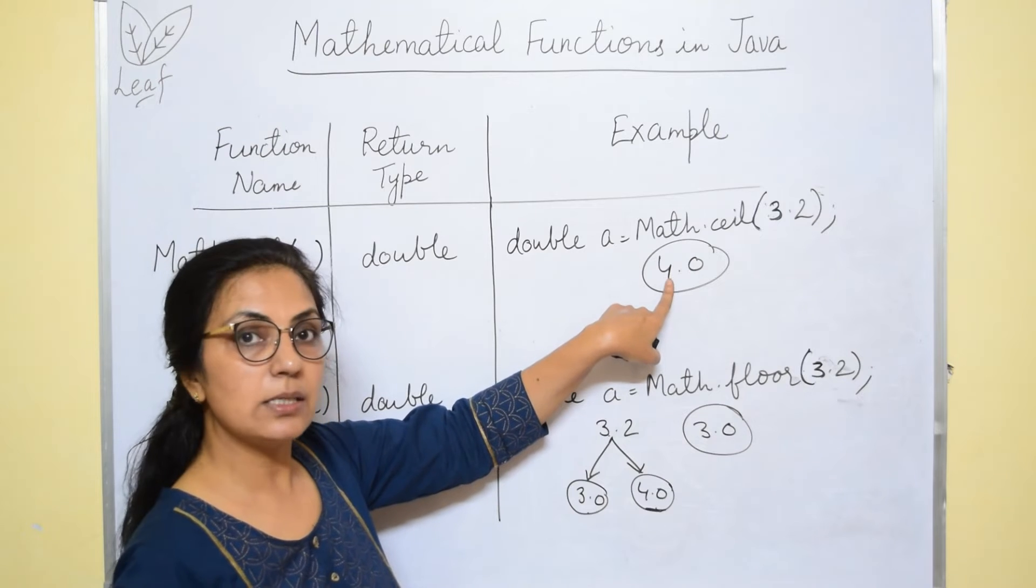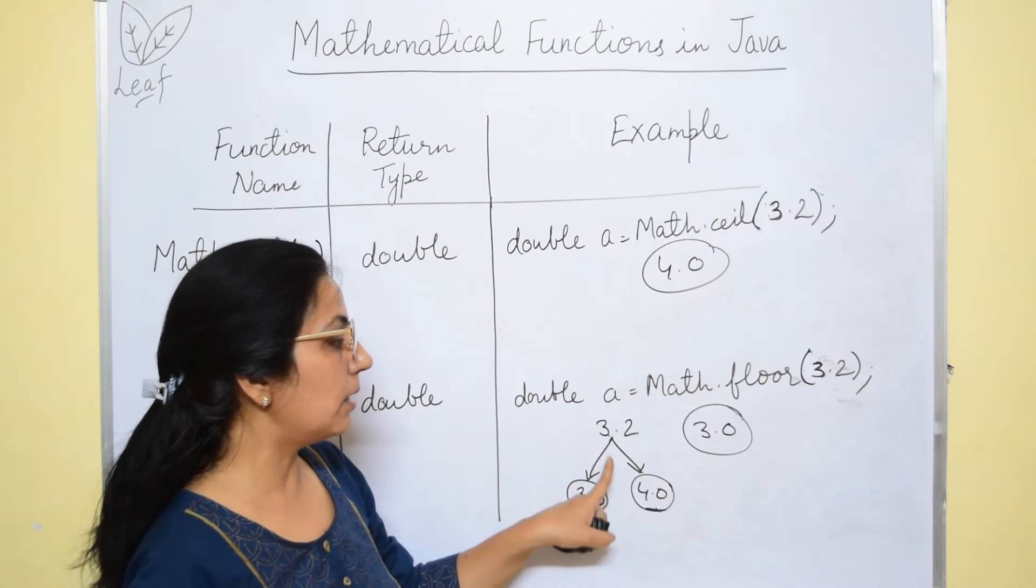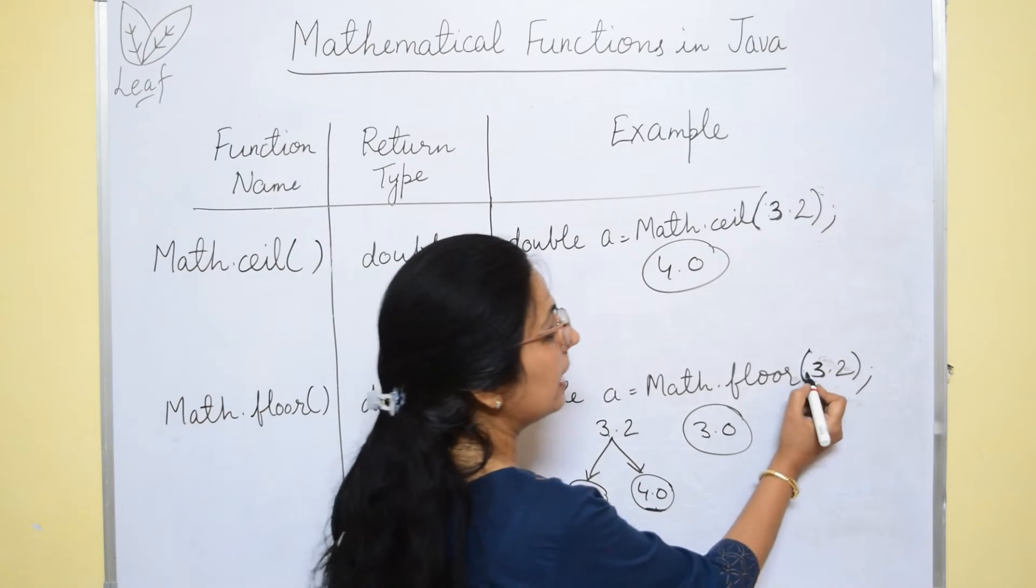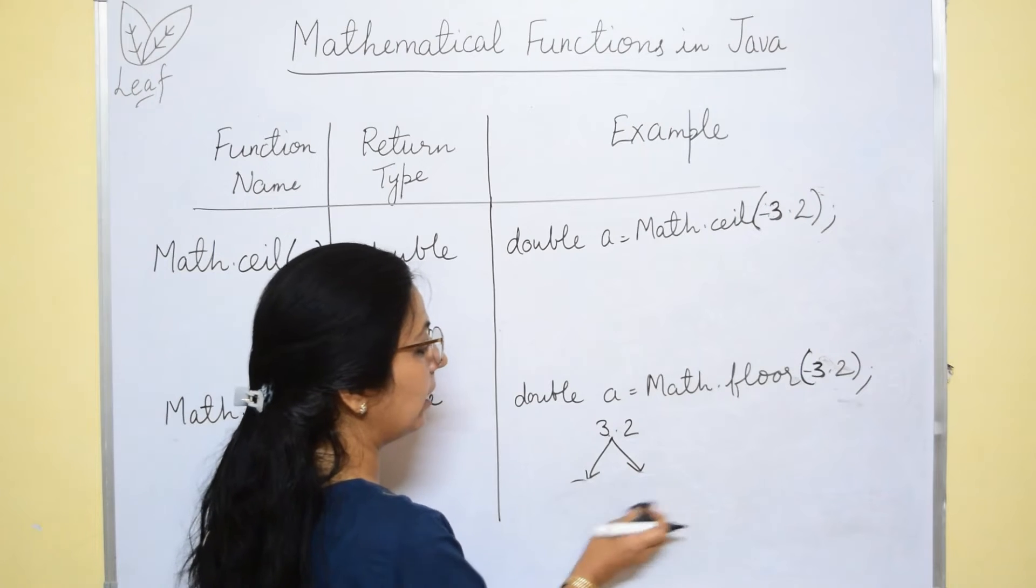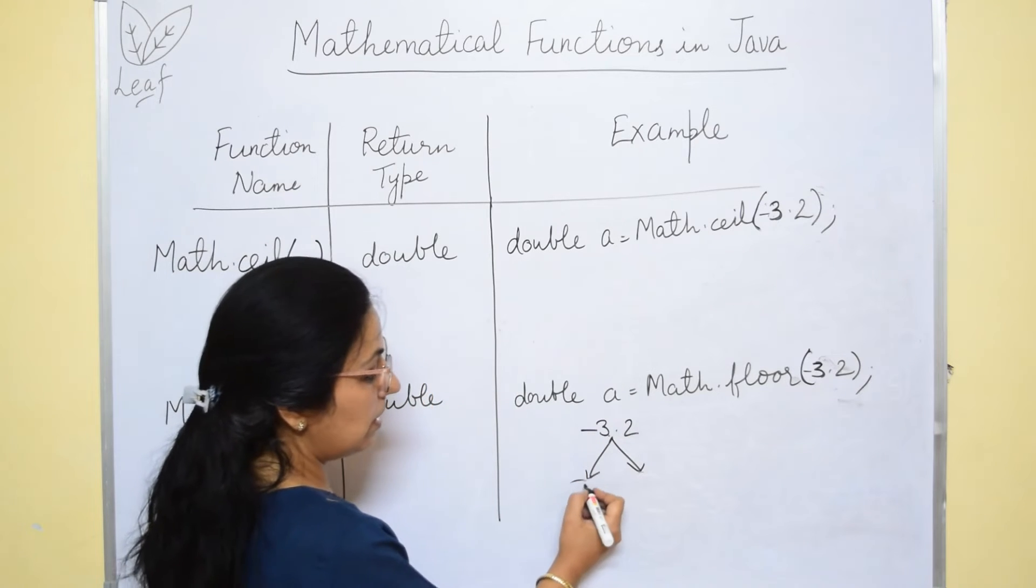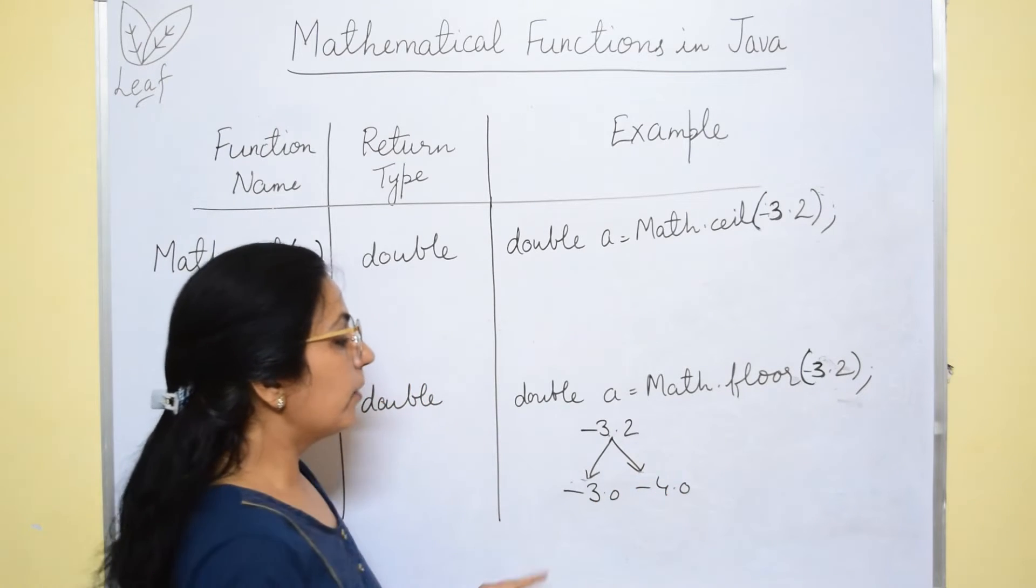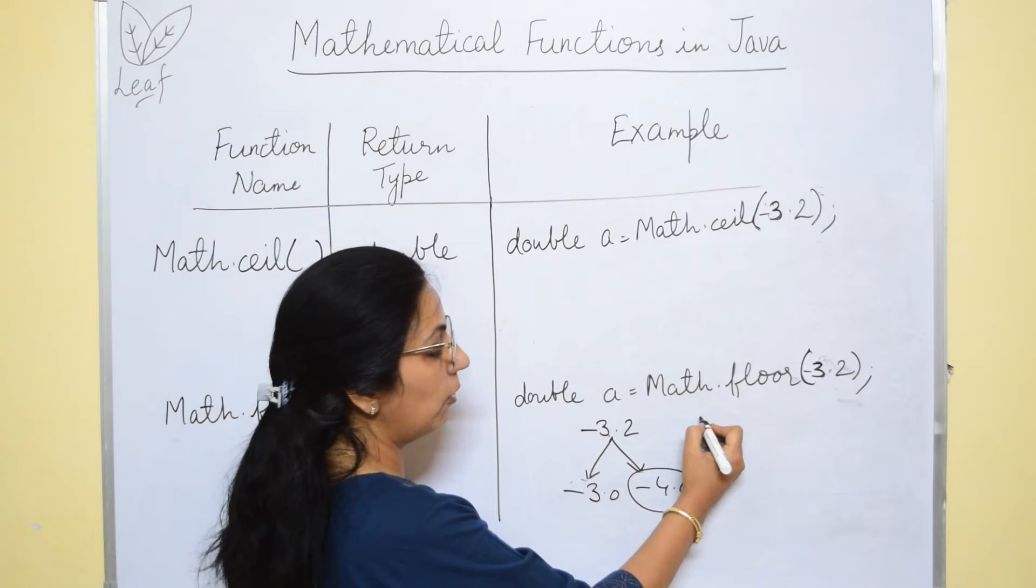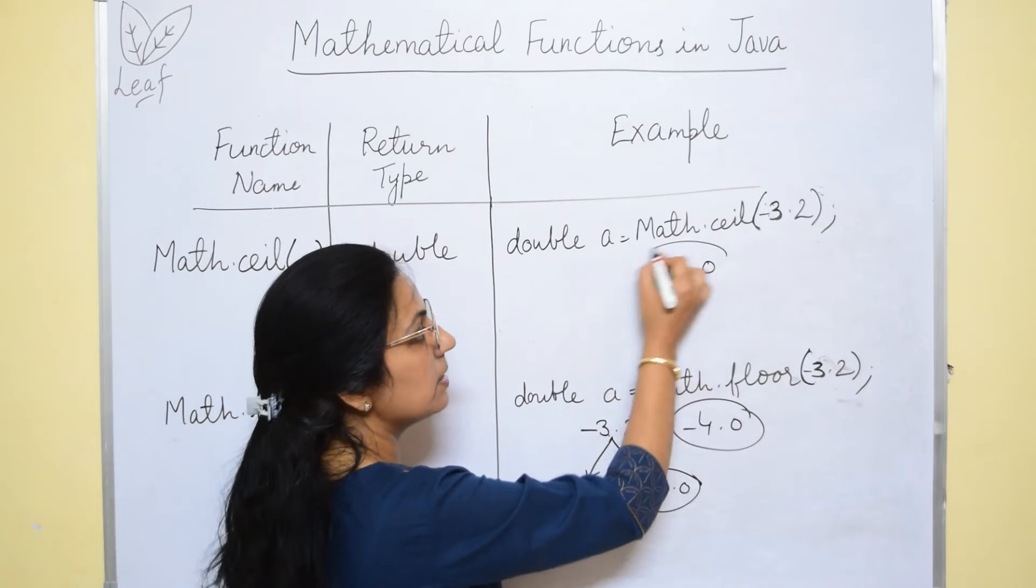Nearest highest integer is the return value of ceil function. Nearest lowest integer is the return value of floor function but in double type. Now, see if I write this negative. If I put a negative sign here, then how you will calculate the value ceil of -3.2 and floor of -3.2. So the nearest values around this is -3.0 and -4.0. Now, which is the lowest value out of these two is -4.0. So the result of floor function will be -4.0 and the result of ceil function will be -3.0.